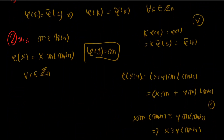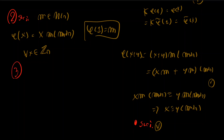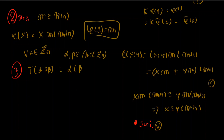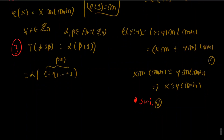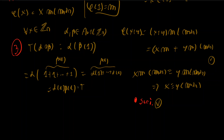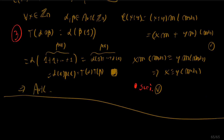For T to be operation-preserving: T(α ∘ β) = (α ∘ β)(1) = α(β(1)). Now β(1) = β(1+1+···+1 one time) so applying α gives α(β(1)+···+β(1)) = α(1)+···+α(1) with β(1) terms, which is α(1)·β(1). So T(α ∘ β) = T(α)·T(β). Thus T is an isomorphism and Aut(ℤₙ) ≅ U(n).